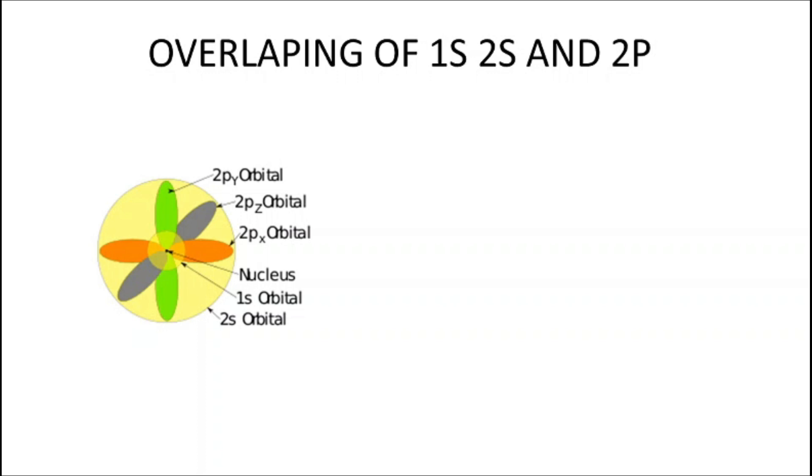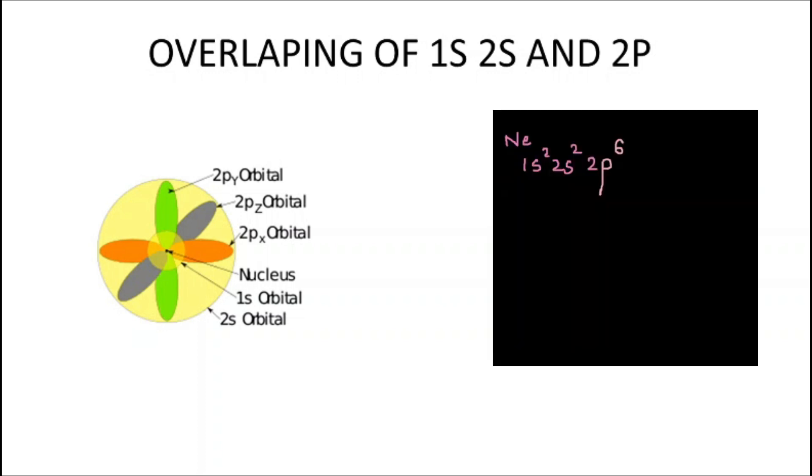Studying the overlap of 1s, 2s, and 2p, let us check an example of neon. The electronic configuration of neon is 1s2 2s2 2p6, the 2-8-18 configuration of inert gases. Let us see how the orbitals are overlapping. Two electrons are present in the 1s orbital. Then moving to lithium and beryllium which contain the 2s orbital, the 2s orbital overlaps the 1s orbital containing 2 more electrons.